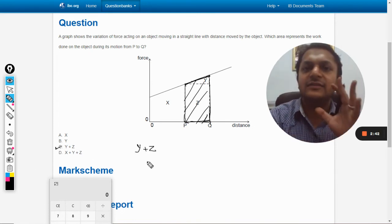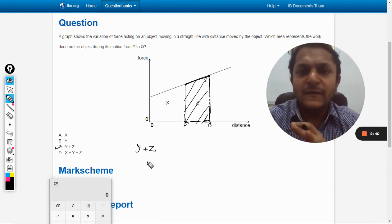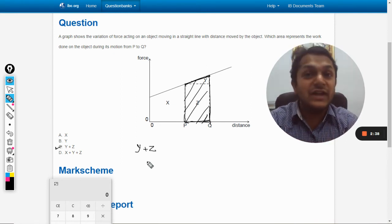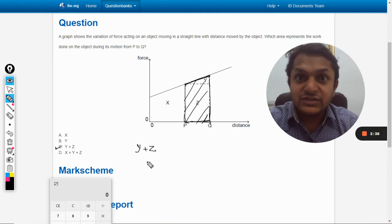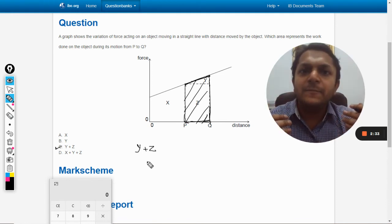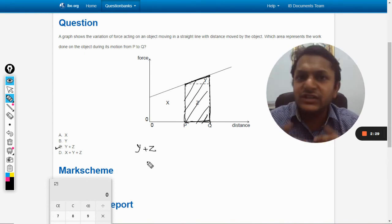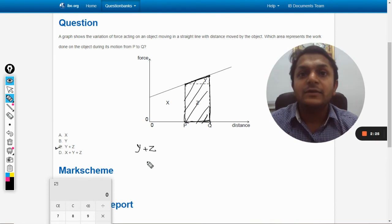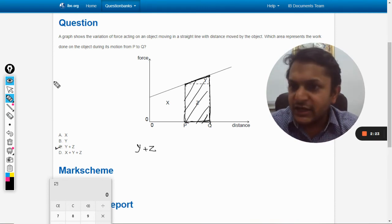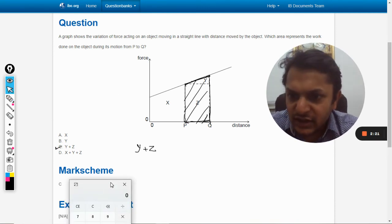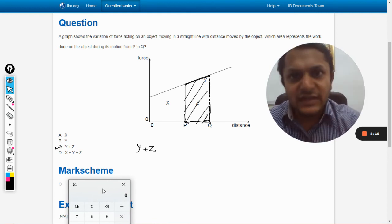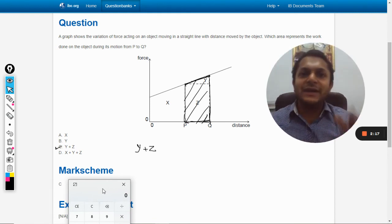As simple as that. The only thing is in these kinds of questions, whenever they come in our examinations, we just are not able to remind ourselves that this is how we do it - that we just need to find the area under the curve for the work done. So be very careful at that time. Let us check the answer. Yes, the answer is c. So with this, all the best, bye.